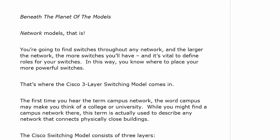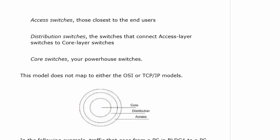So the Cisco switching model — let's take a look at it now. It consists of three layers, as you've probably guessed: core, distribution, and access. Core, of course, is at the middle of these three circles — it's the innermost circle. Distribution is your middle layer, and access is your outside layer. Your access switches are those closest to the end users — a good way to remember that is that's how your end users access the network.